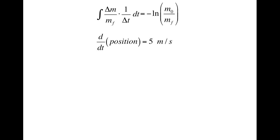In saying that an integral is an anti-derivative, I mean that the derivative of the result of an integration will get what was initially inside the integral. That is, I need to show that the derivative with respect to time of negative log of m0 over mf will get what was originally inside the integral, namely, delta m over mf times 1 over delta t.